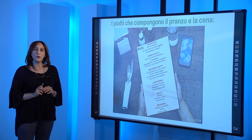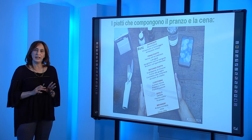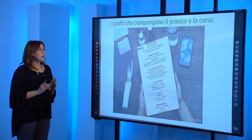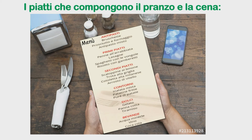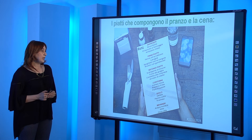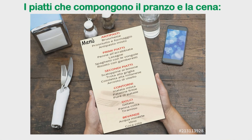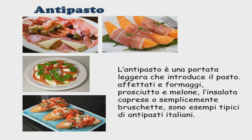Vediamo adesso i piatti che compongono il pranzo oppure la cena. Avete qui un menù italiano. Vediamo di che cosa è composto. Se andate in un ristorante italiano, troverete questo tipo di menù. In questo menù ci sono gli antipasti, poi i primi piatti, i secondi piatti serviti con i contorni, e poi alla fine c'è il dessert composto soprattutto di dolci. Poi ci sono anche le bevande. L'antipasto è una portata leggera che introduce il pasto.